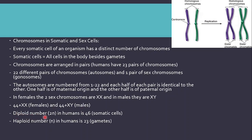Diploid numbers and haploid numbers: the diploid number in humans is 46 chromosomes — this is how many chromosomes there are in somatic cells. The haploid number is how many chromosomes there are in gametes, and the diploid number is double that of the haploid number. Think of it as D for diploid equals double, and H for haploid equals half the diploid number. In humans, the diploid number is 46 and the haploid number is 23.